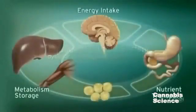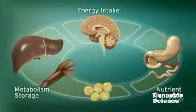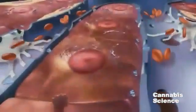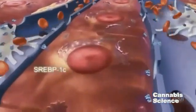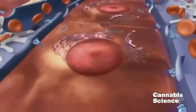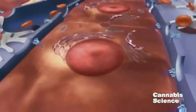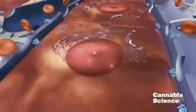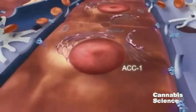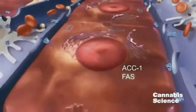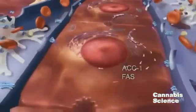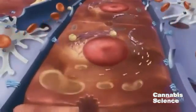Chronic stimulation of the ECS is associated with dyslipidemia. Activation of CB1 receptors increases expression of SREBP1C, a lipogenic transcription factor, and increases fatty acid synthesis. SREBP1C increases production of lipogenic enzymes, ACC1 and fatty acid synthase. Increased fatty acid synthesis can lead to production of large triglyceride-rich VLDL.